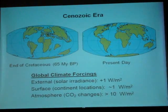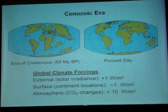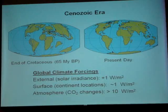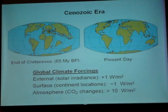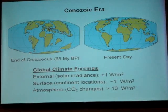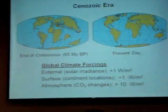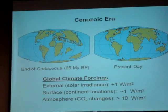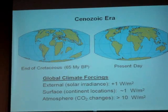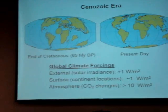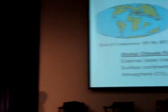The mechanisms have to be either the energy coming in, or some changes in the atmosphere, or some changes at the surface. But the energy coming in — the sun is a well-behaved main-sequence star. And we know how they behave; it's slowly getting brighter with time.